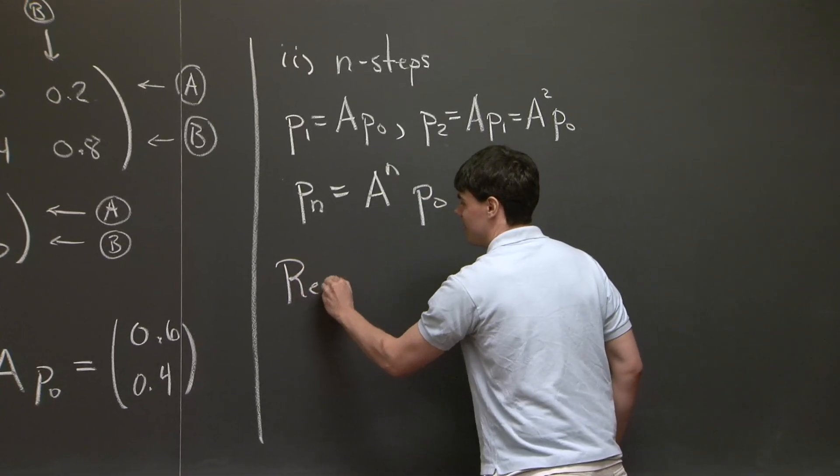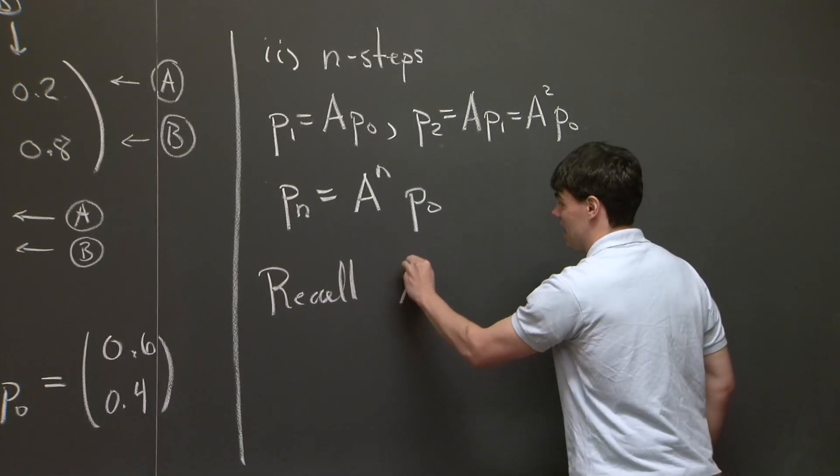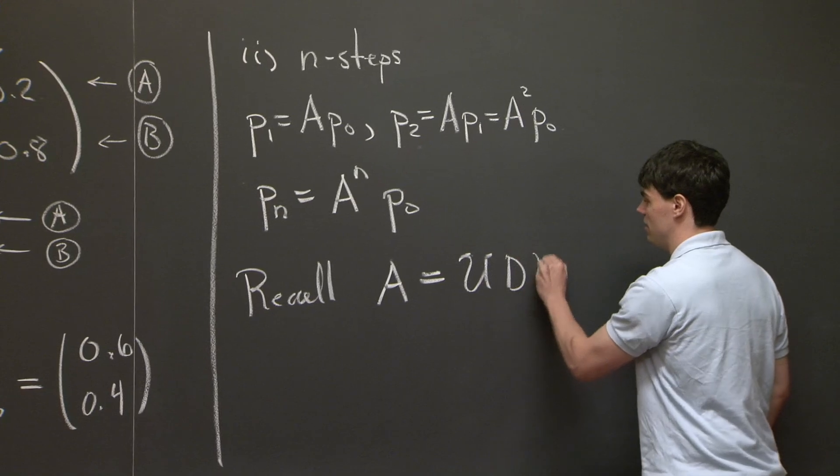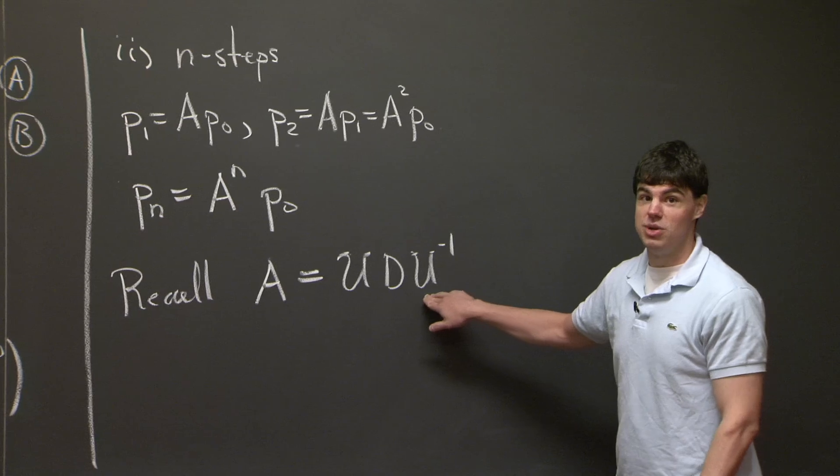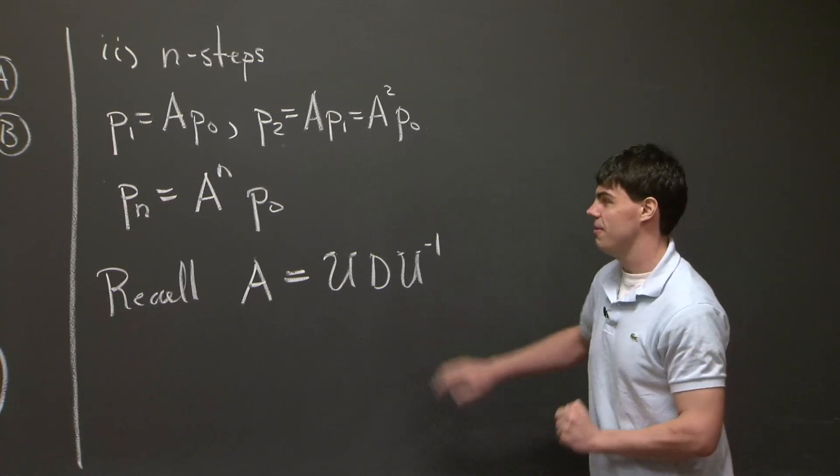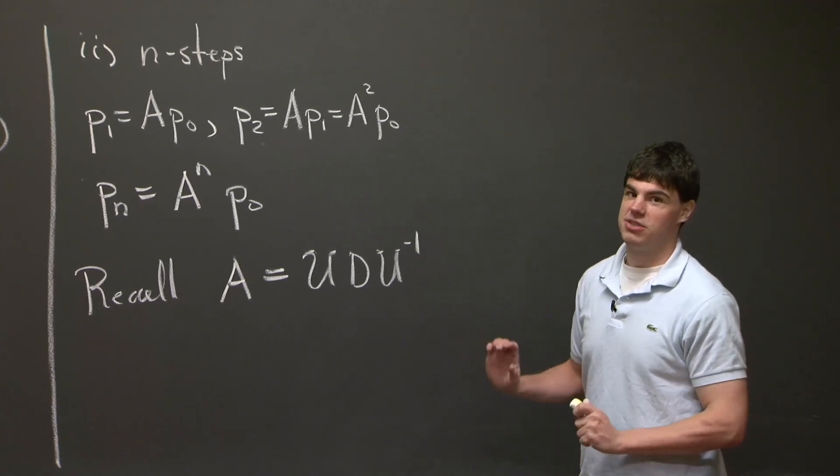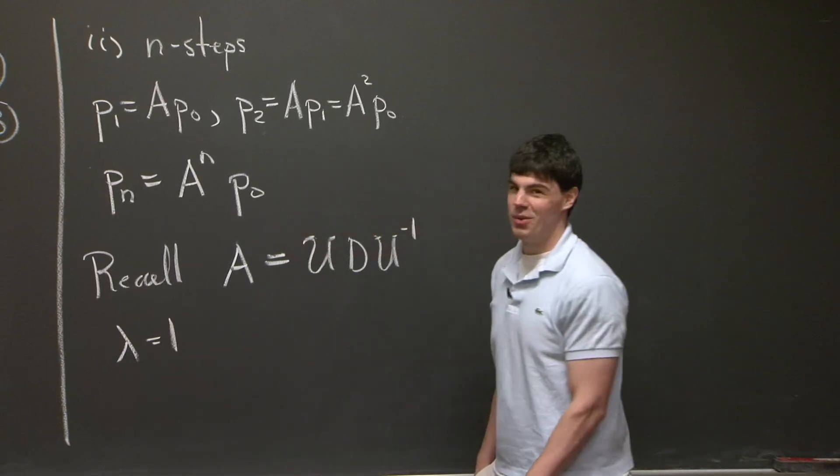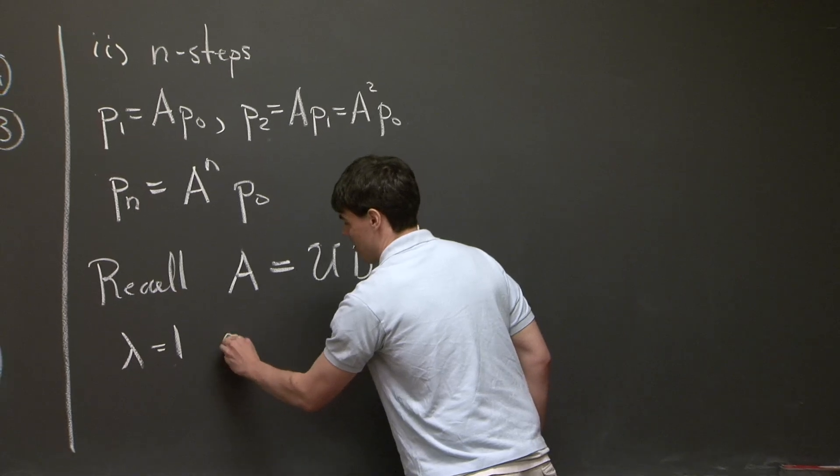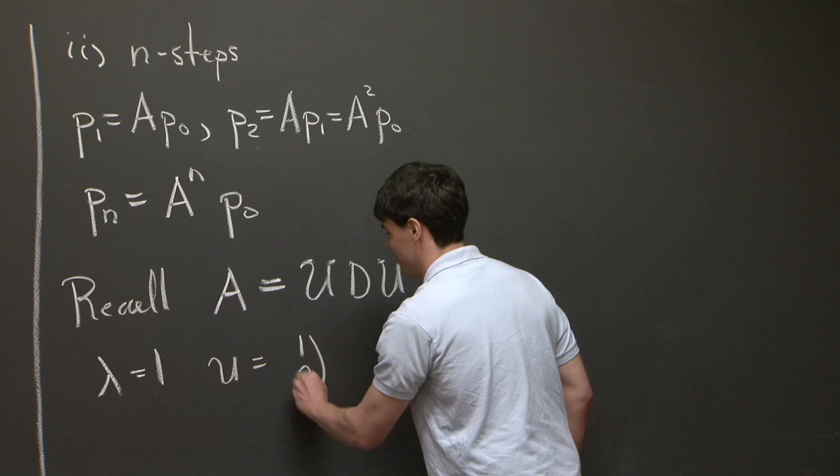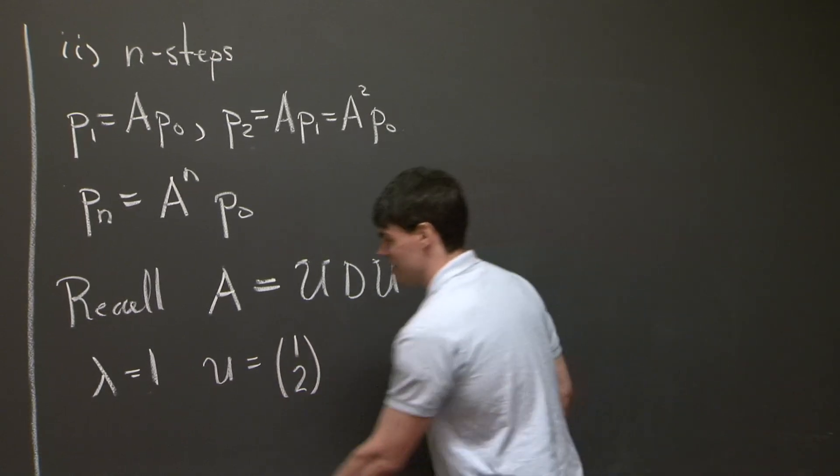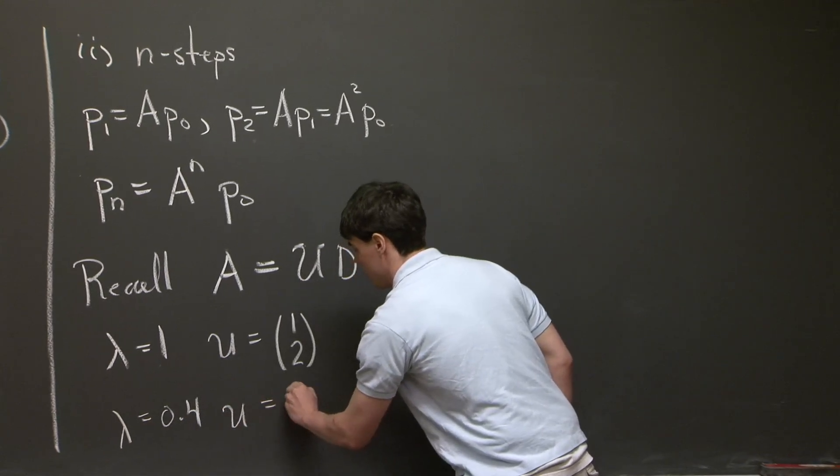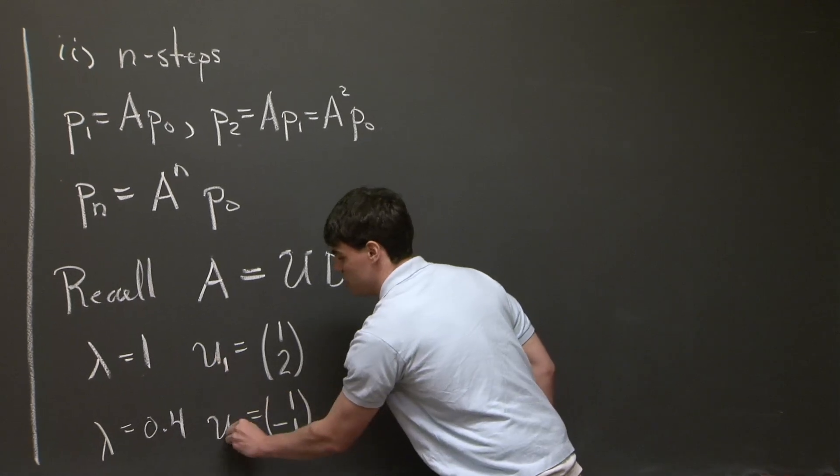So recall that we can take any matrix A that's diagonalizable and write it as U D U inverse, where D is a diagonal matrix. And this matrix U is a matrix whose columns correspond to the eigenvectors of A. So for this problem, I'm just going to state what the eigenvalues and eigenvectors are, and I'll let you work them out. So because it's a Markov matrix, we always have an eigenvalue, which is 1. And in this case, we have an eigenvector u, which is 1 and 2. In addition, the second eigenvalue is 0.4, and the eigenvector corresponding to this one is 1 minus 1. And I'll just call these u1 and u2, like that.